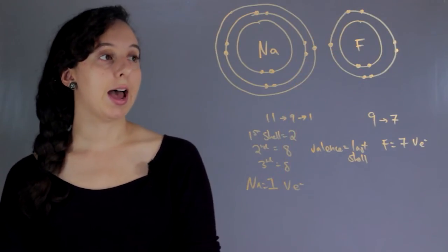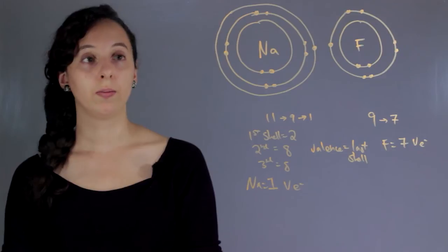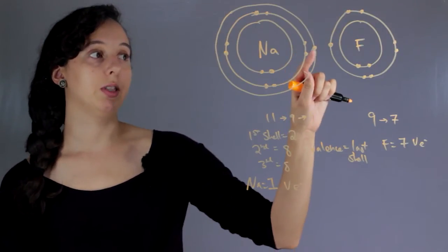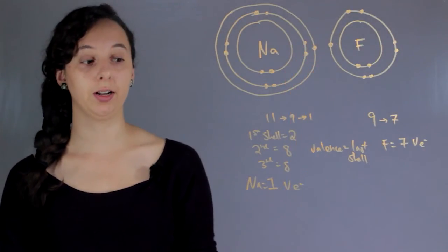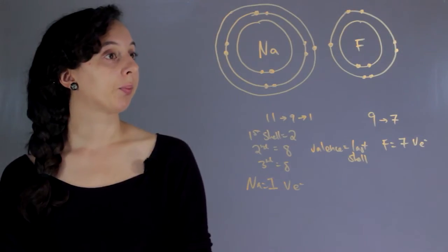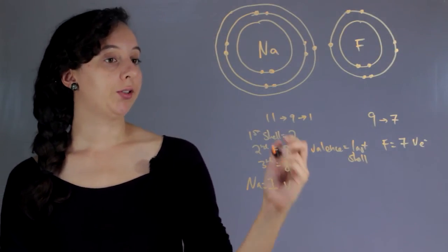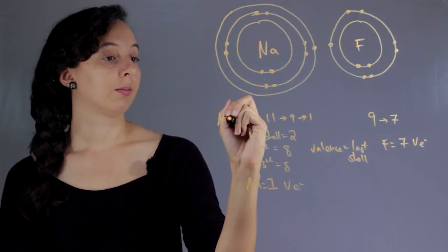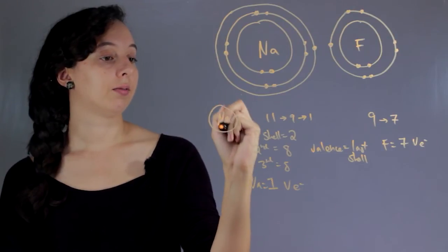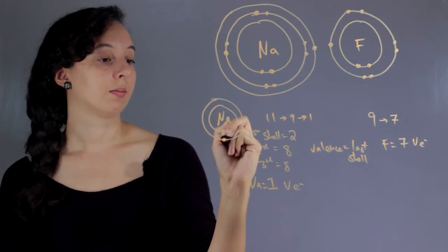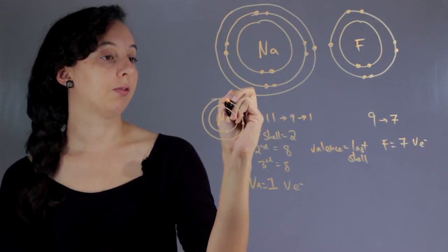So the way that they can both achieve their goal is if sodium gives this electron to fluorine. So if you do that, you would get a sodium that had 2 here. It's 8, like before.